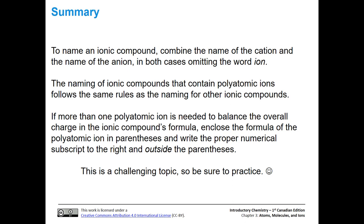To summarize: to name an ionic compound, take the name of the cation and the name of the anion, put them together, and remove the word ion from both. The rules for naming ionic compounds that contain polyatomics are exactly the same as for other ionic compounds — the only difference is that you have to recognize you're dealing with a polyatomic ion, which is why you need to memorize the name, formula, and charge. If you need more than one polyatomic ion to balance the overall charge, use parentheses around the polyatomic ion with the subscript outside. This is a challenging topic, so be sure to practice.